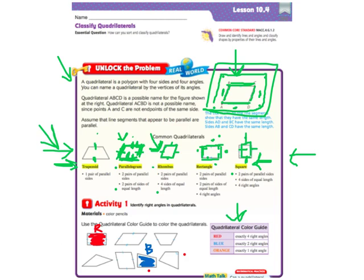Last is orange if it has exactly one right angle. This one has the one right angle. So that one will be orange or you can just write it O.